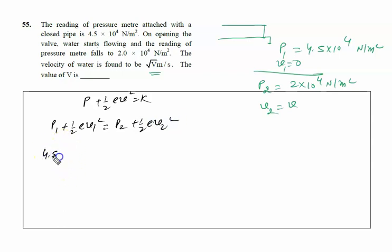Initially P₁ is 4.5 × 10⁴ and initial velocity is 0, so V₁ = 0. Finally, P₂ is 2 × 10⁴ plus half the density, which is 1000, into V₂ square, that is V that we have to calculate.